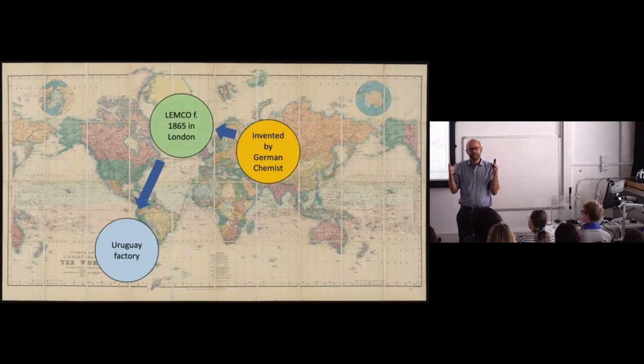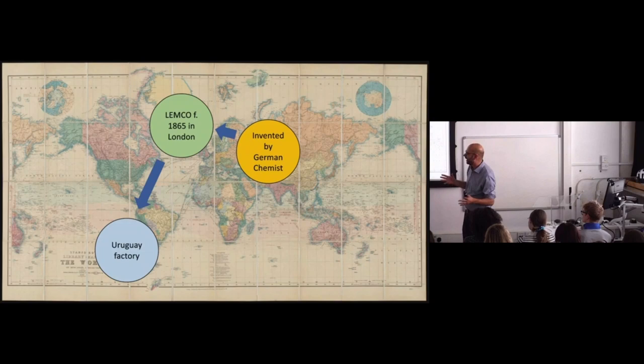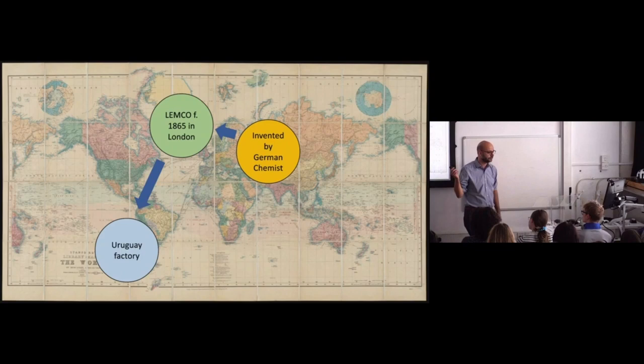Has anyone ever seen, or perhaps had the misfortune of tasting, something called a Fray Bento's pie? The next time you're in the canned goods section of a supermarket, look for one — perhaps in your corner shop, they're more likely to be found there these days. It's a very popular product. And it's actually manufactured in the same place that makes the OXO Cube, which is a town called Fray Bentos, that takes on lots of migrant labour coming from Europe and other parts of the world to work the cattle and process it into different kinds of products that can then be shipped around the world.